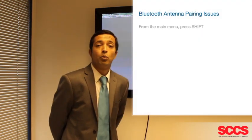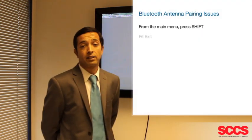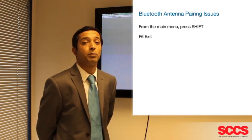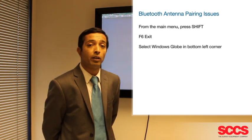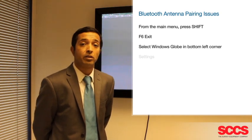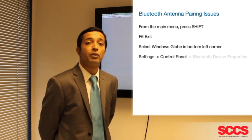From main menu, we press shift and then F6 exit. That takes you to a Windows desktop type screen. You'll then press the Windows globe in the bottom left hand corner and go to settings, control panel, Bluetooth device properties.